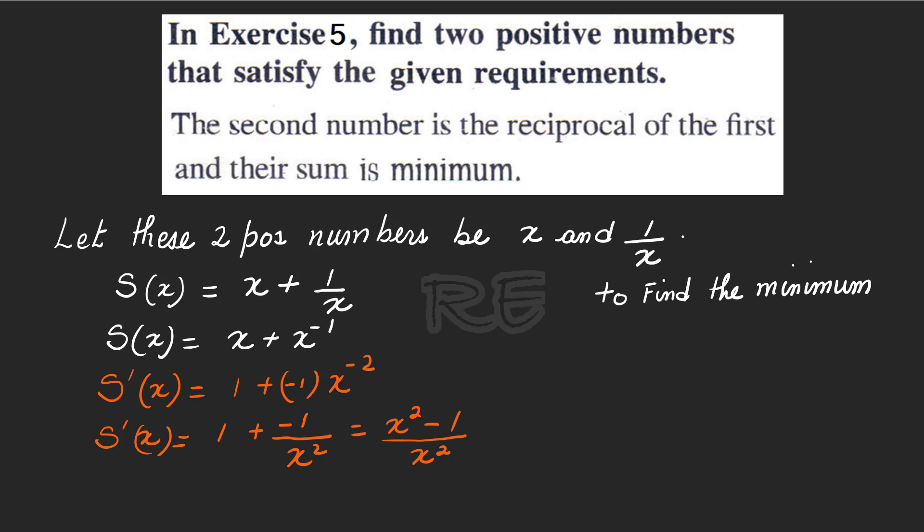To find the minimum, which is a critical value of the derivative, we need to set the derivative equal to 0, which means setting the numerator equal to 0. X squared minus 1 equal to 0. Therefore, X is equal to plus or minus 1.